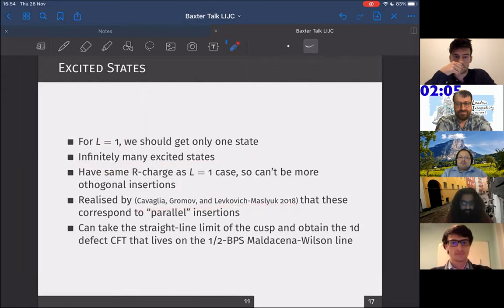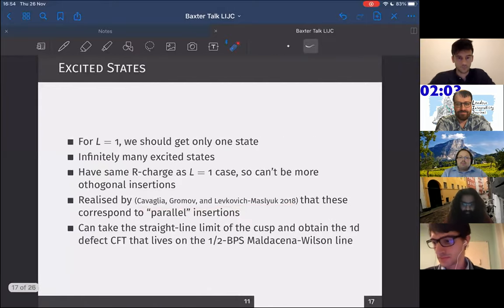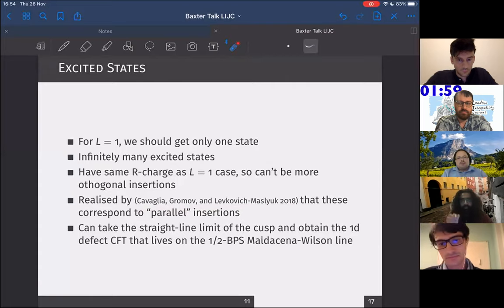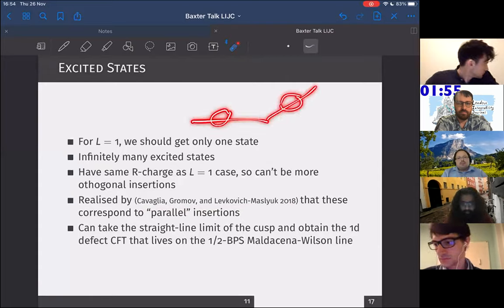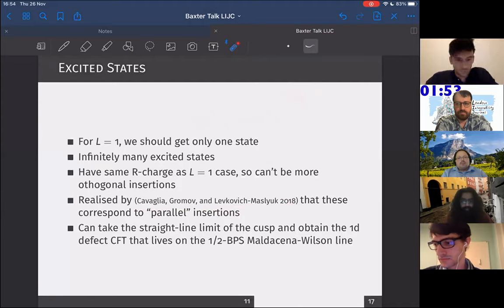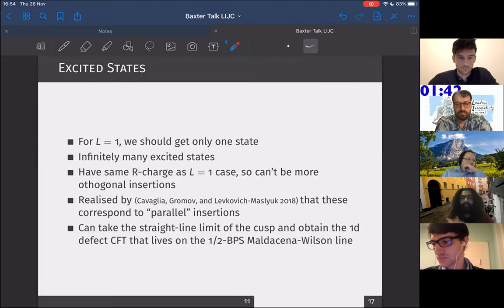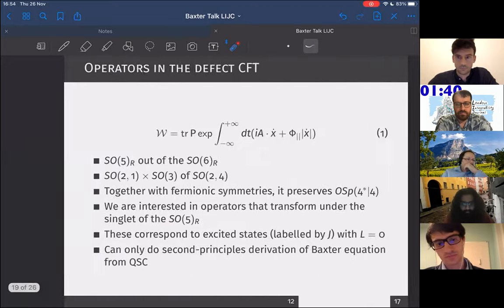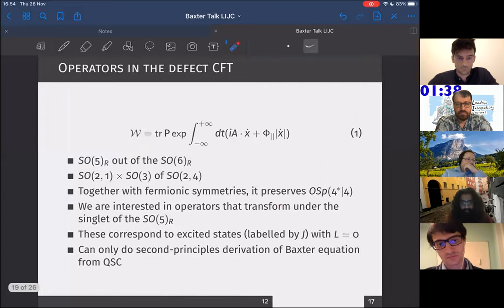I tell you, actually ask Kolia and Andrea and Fyodor, because they correctly interpreted these excited states as corresponding to parallel insertions, which mean insertions of scalars which are spanned by those that coupled to the Wilson line itself. This is actually quite cool, because what we can do is we can then take the straight line limit of the cusp and obtain the defect CFT that lives on the half BPS Maldacena-Wilson line and also have access to its spectrum. That's exactly what we did as well.